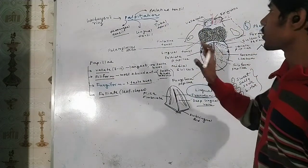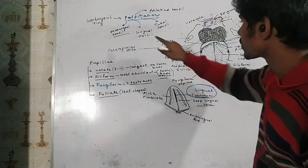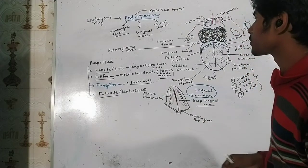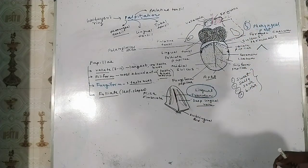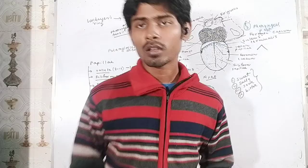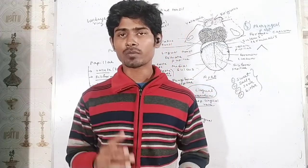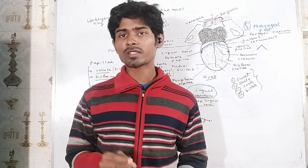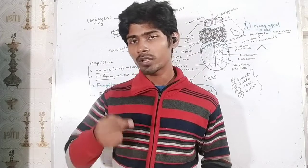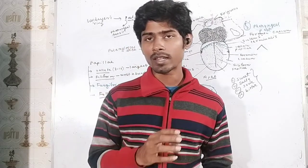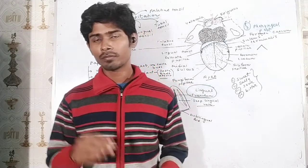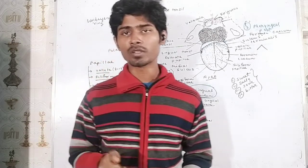This is called Waldeyer's ring because these tonsils form a ring-like structure. That covers the overall anatomy. Now let's talk about the functions of the tongue. The tongue plays a very important role in digestion — the food we eat is mixed with saliva secreted by the various salivary glands through the action of the tongue.